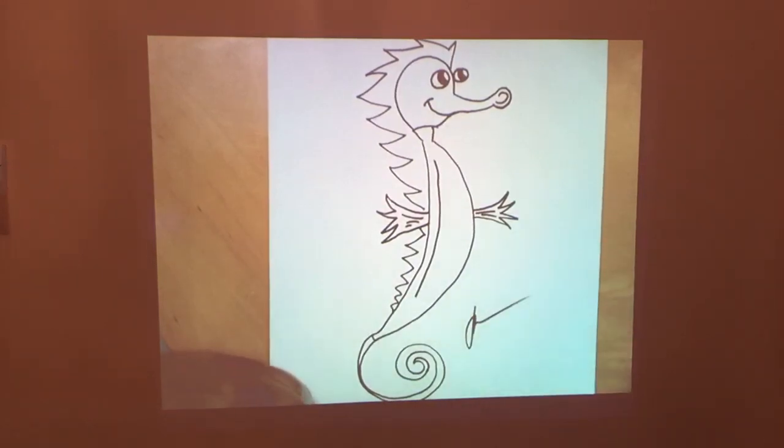We have drawn the seahorse banana. I'll sign this for Sam. There you go. Alright, we are now going to draw Ella's spaghetti seahorse.